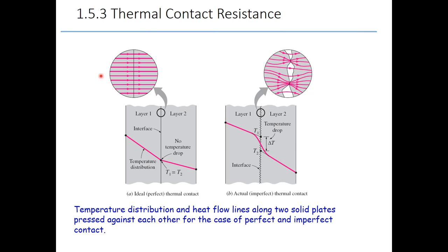In our previous lecture, we learned about the thermal circuit for multi-layer plane wall. When we talk about multi-layer, it might involve different materials for each layer. That is why, when these layers are in contact with each other, we need to consider the thermal contact resistance.